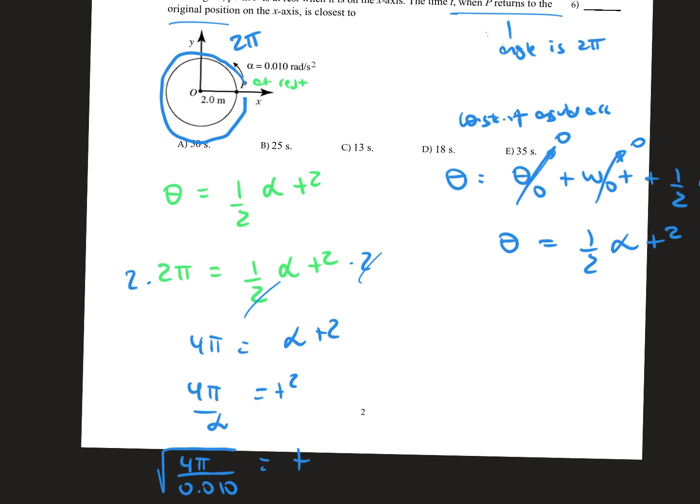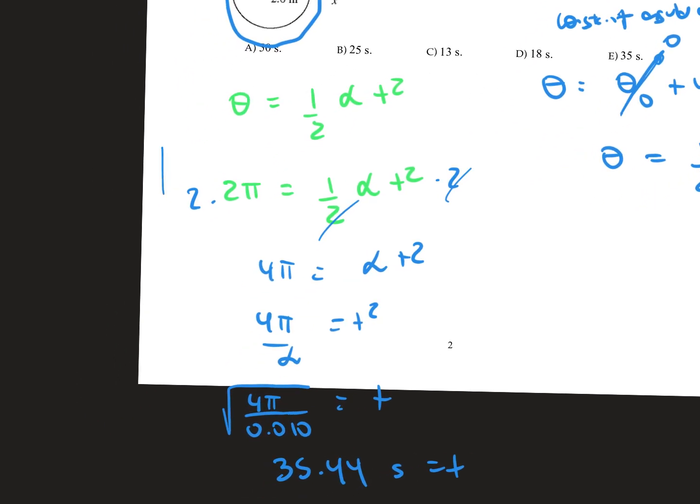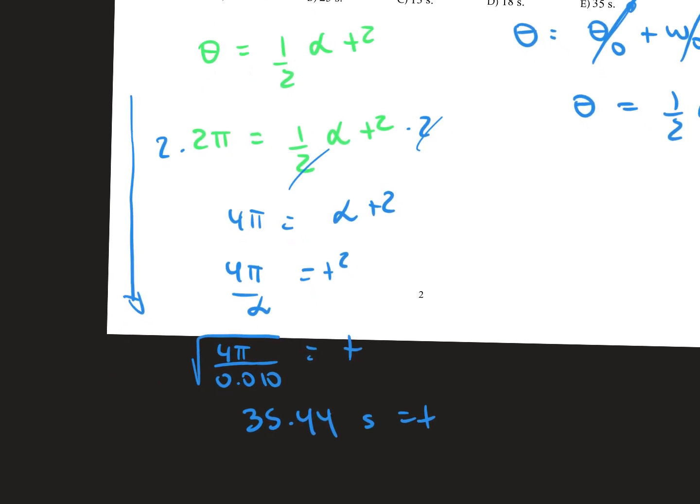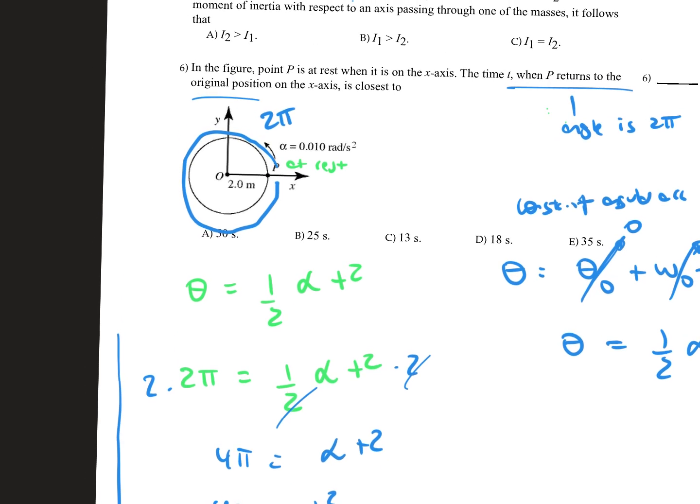So in this case we're going to solve for t. As we do that and we do some algebra, we're going to end up with t equal square root of 4π divided by 0.010, which is the angle of acceleration that's given in the first place.